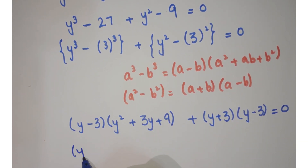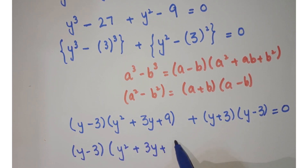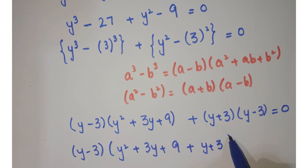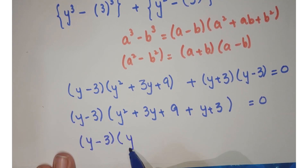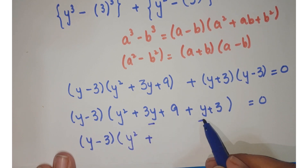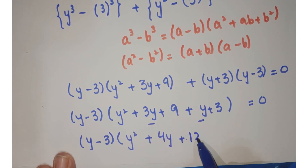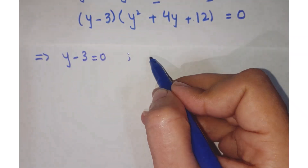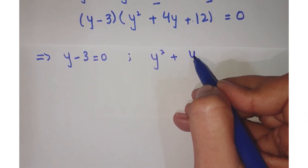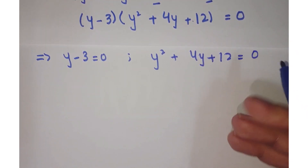Taking (y minus 3) as common from both terms, we get (y minus 3)(y squared plus 3y plus 9 + y + 3) equals 0. Simplifying inside the bracket: (y minus 3)(y squared + 4y + 12) equals 0. This implies y minus 3 equals 0, or y squared plus 4y plus 12 equals 0.